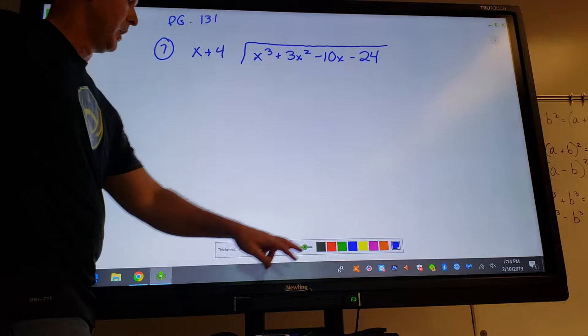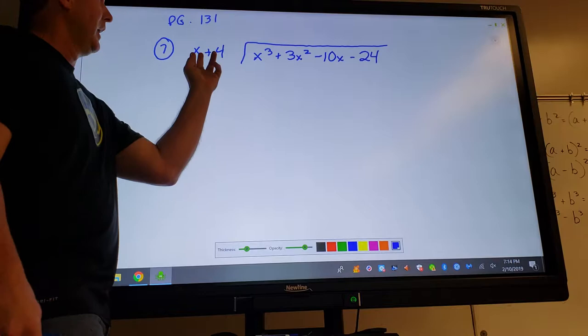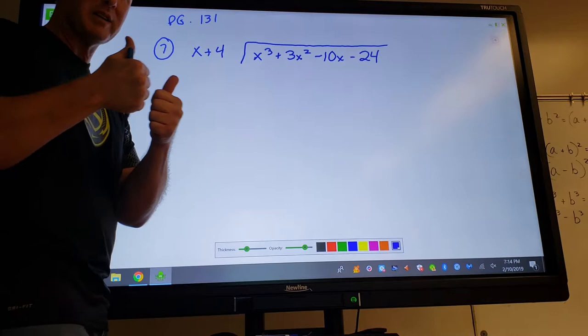Alright, welcome. Number seven, page 131. The directions ask you to determine whether each binomial is a factor. They give you this binomial and want to know if you use long division to divide it into this, is your remainder zero? If the remainder is zero, then yes it's a factor.